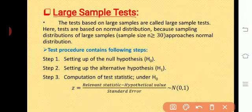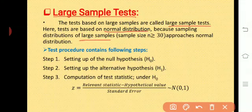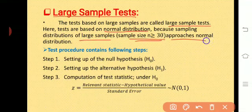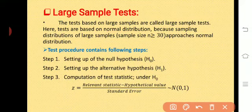Tests based on large samples are called large sample tests. Here, tests are based on normal distribution because sampling distributions of large samples — that is, samples of size n greater than or equal to 30 — approach the normal distribution. So remember, whenever the sample size is given as greater than or equal to 30, we have to consider it as a large sample test.